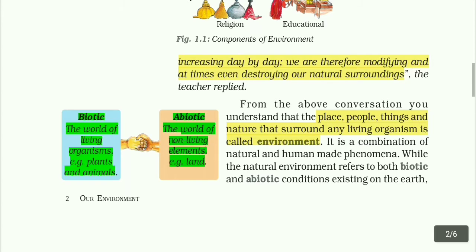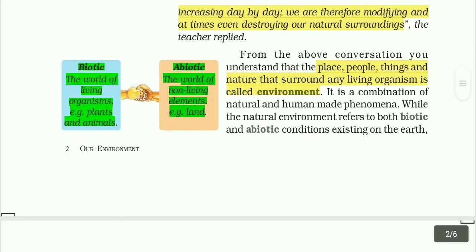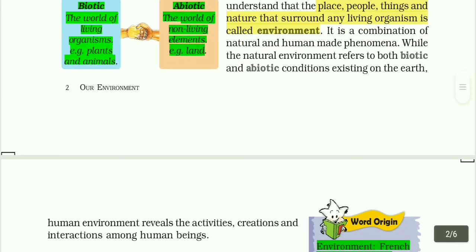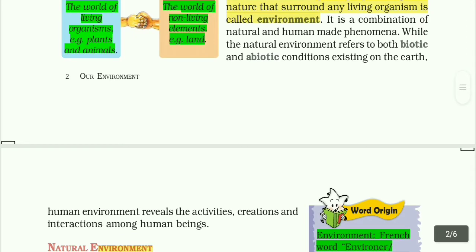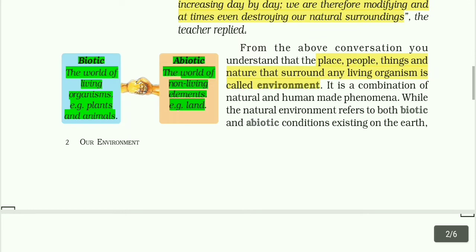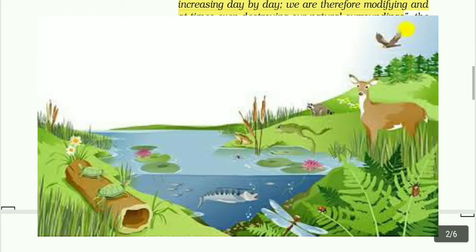While the natural environment refers to biotic and abiotic conditions existing on the earth, the human environment reveals the activities, creations and interactions among human beings. Biotic means the world of living organisms — for example, plants and animals.